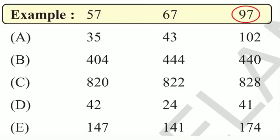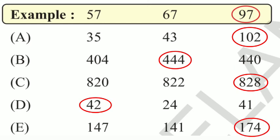Altogether, greatest numbers? 102, 144, 828, and 42, 174. Okay.